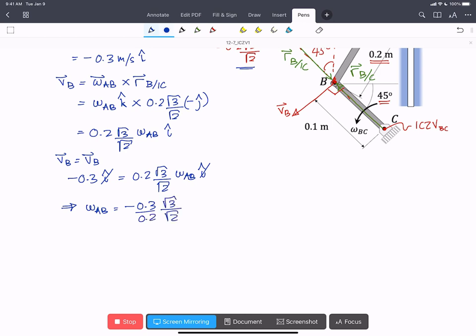And we find that omega AB equals minus 0.3 over 0.2 root 3 over root 2, which also equals minus 1.22 rads per second. And we can write that out in vector form as minus 1.22 rads per second in the K hat direction.